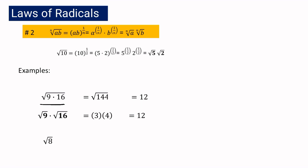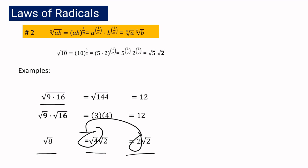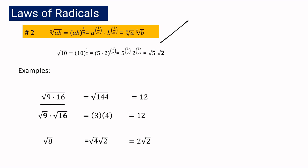For our next example, if you have square root of 8, note that 8 is not a perfect square. But we can express square root of 8 as square root of 4 multiplied by the square root of 2. The square root of 4 is 2, so square root of 8 is equal to 2 square root of 2. Using our second law of radicals, square root of 8 equals 2 square root of 2.